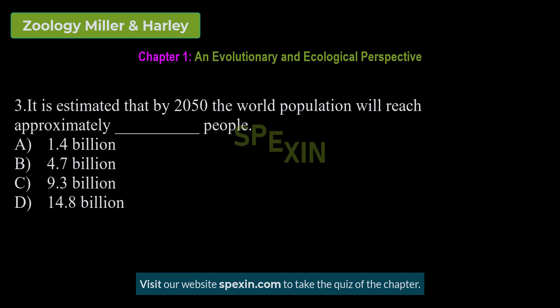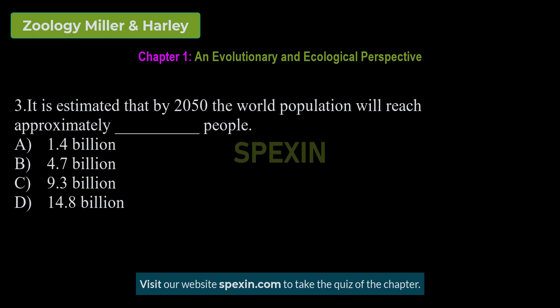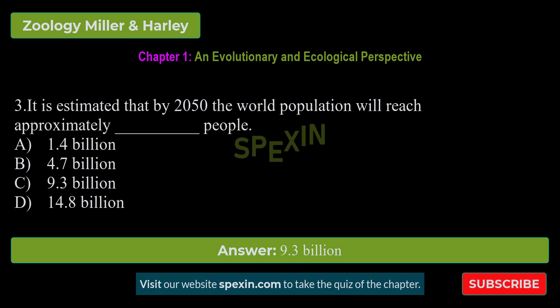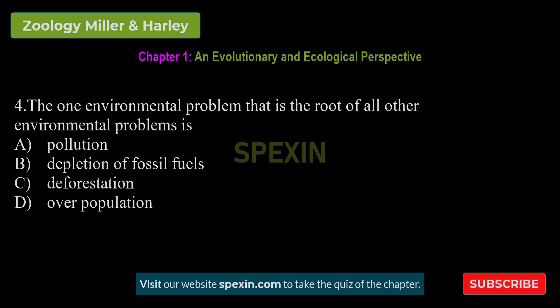It is estimated that by 2050 the world population will reach approximately how many people? Options: 1.4 billion — 4.7 billion — 9.3 billion — 14.8 billion. Correct answer: 9.3 billion.